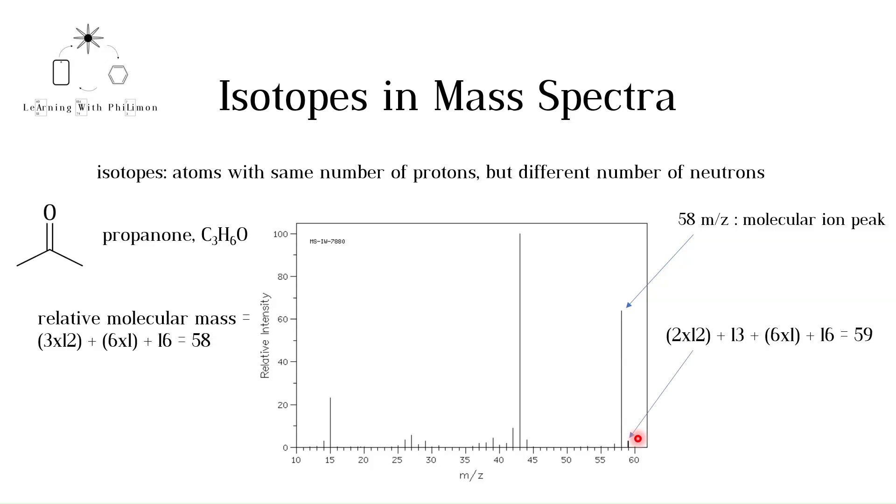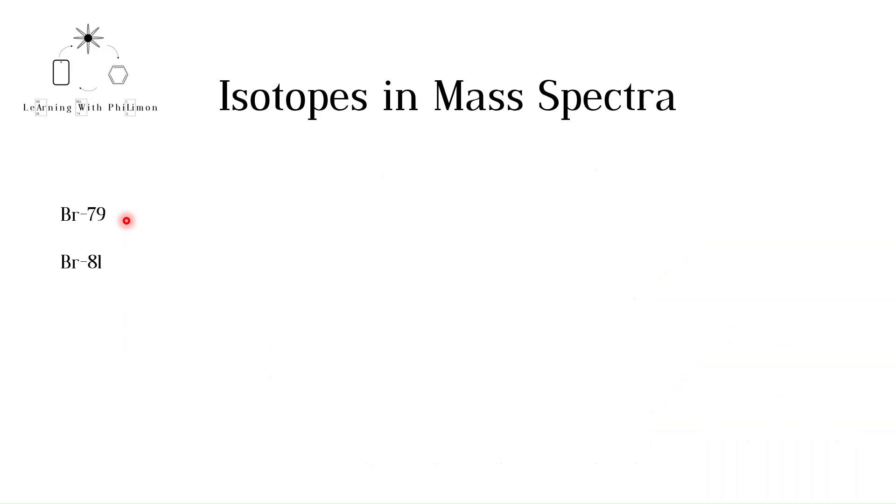These peaks are often referred to as M plus 1 peaks. Other isotopes can also affect the peaks we see in mass spectra. Bromine has two stable isotopes, Br79 and Br81. They differ by two neutrons. Their abundance is almost the same.